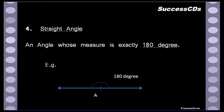Next we come to straight angle. A straight angle is an angle about a point whose measure is exactly 180 degrees. If you see this line, at point A, you start from one side and go till the other side — it's a straight line. A straight line is always at an angle of 180 degrees. Please remember: a straight line is an angle measure of 180 degrees. Therefore, the angle around point A is 180 degrees.